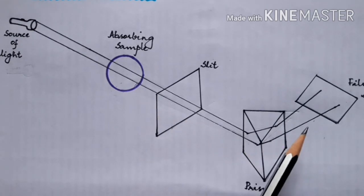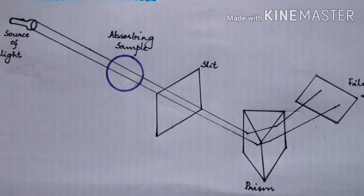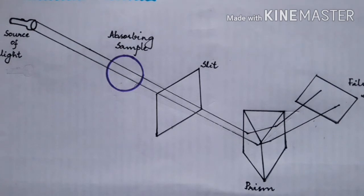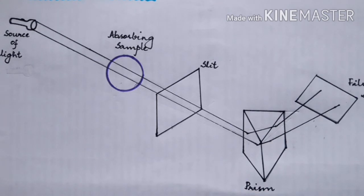The transmitted radiations are allowed to fall on the spectroscope and the emergent rays are recorded. Absorption spectrum consists of dark lines, and their colors are opposite to that of a continuous spectrum. The line spectrum of each and every molecule or atom is unique in nature. Absorption spectrum is also a line spectrum and it is a photographic negative of an emission spectrum — when both are merged together, we get white light.